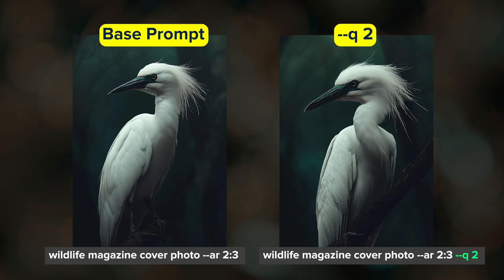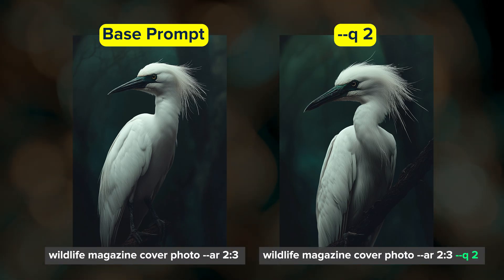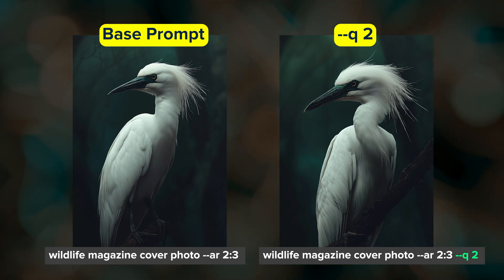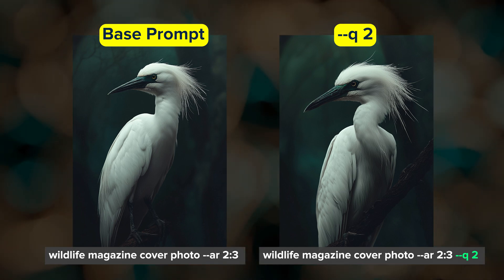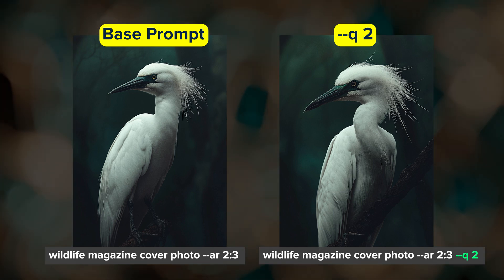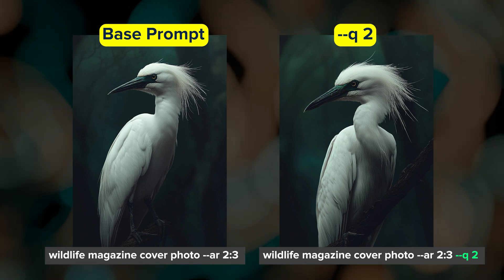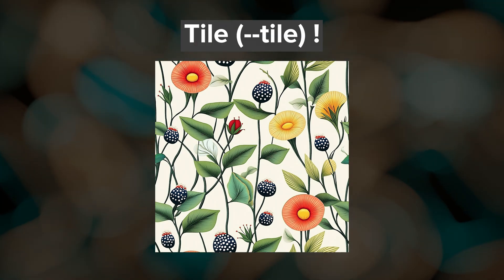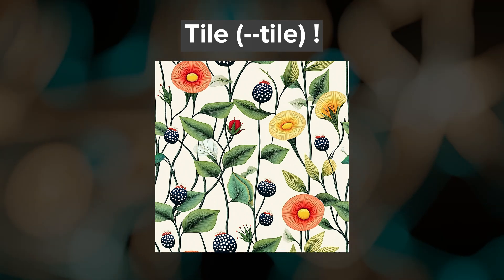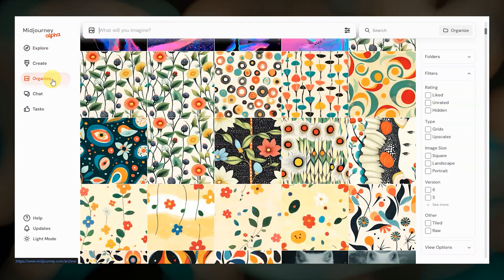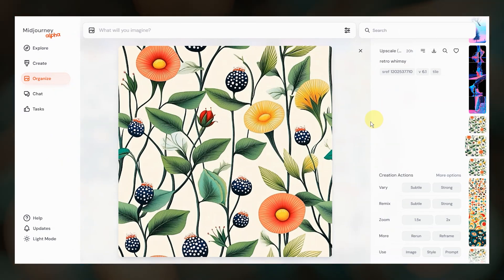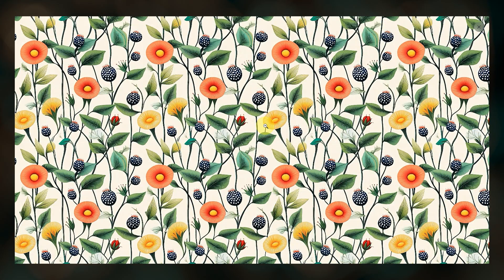6.1 also has a Q2 mode, which you can use to add more texture and detail to your images, but at the cost of slightly reduced image coherence. Q2 jobs take about 25% longer to complete, but it's another parameter to experiment with. Tile works better in 6.1 and finally works with the upscaler. Did you know that when you open a tile image on the website and then click on the image, it will tile it across the page for you? Pretty cool.